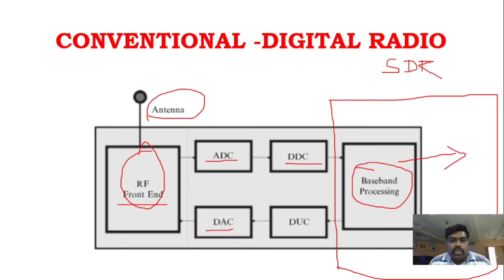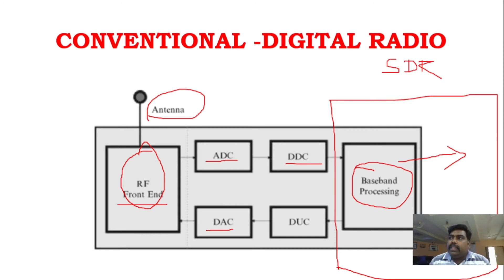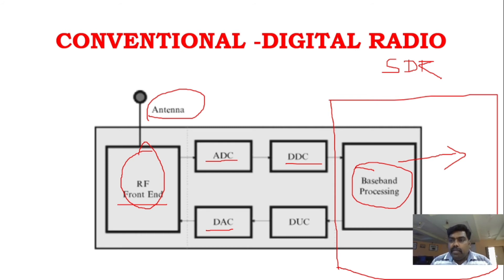That is called SDR. So now you understand SDR — in the baseband processing, instead of using fixed hardware, we use programmable hardware. That is called SDR. The software defined radio will reconfigure itself — it can reconfigure modulation techniques and implement a number of digital waveforms and modulation techniques. We can achieve a lot of modulation techniques and waveforms — that is the main use of SDR.